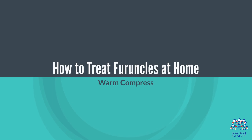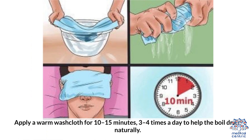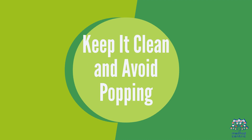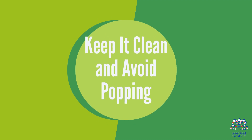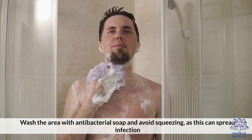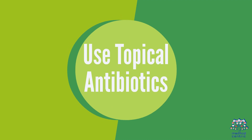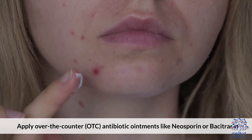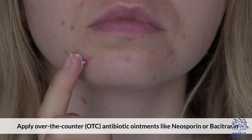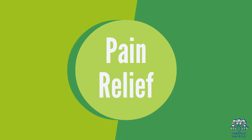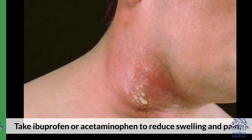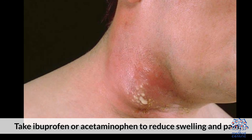How to treat furuncles at home: First, apply a warm compress — use a warm washcloth for 10 to 15 minutes, 3 to 4 times a day, to help the boil drain naturally. Second, keep it clean and avoid popping — wash the area with antibacterial soap and avoid squeezing, as this can spread infection. Third, use topical antibiotics — apply over-the-counter antibiotic ointments like Neosporin or Bacitracin. Fourth, for pain relief, take ibuprofen or acetaminophen to reduce swelling and pain.